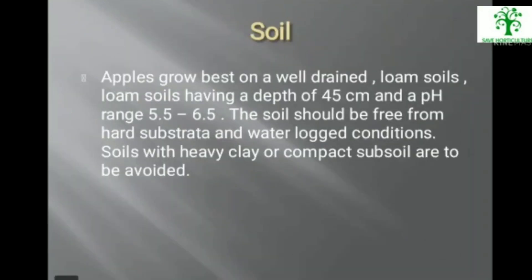Apple grows best on well-drained loam soils having a depth of 45 cm and a pH range of 5.5 to 6.5. The soil should be free from hard substrata and waterlogged conditions. Soils with heavy, compact subsoil are to be avoided.